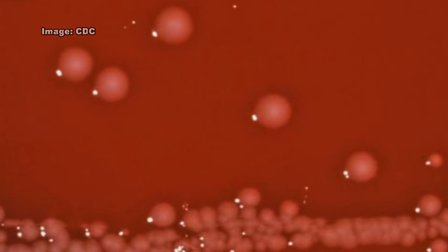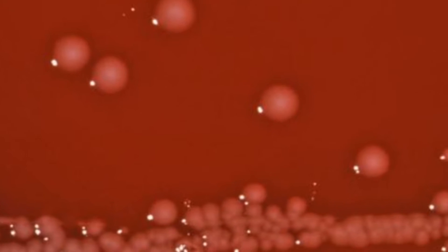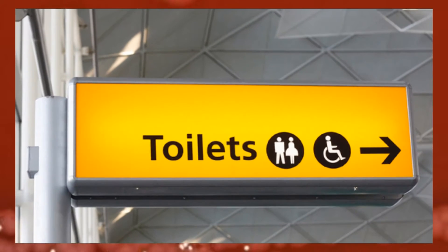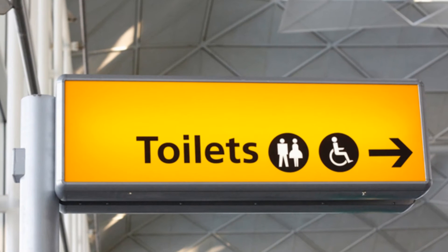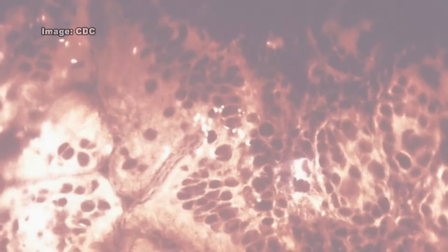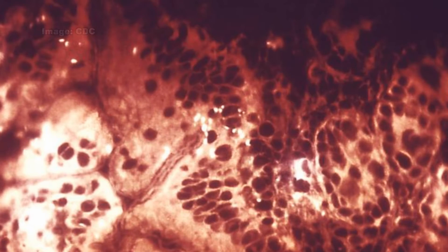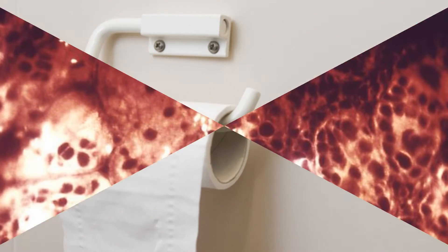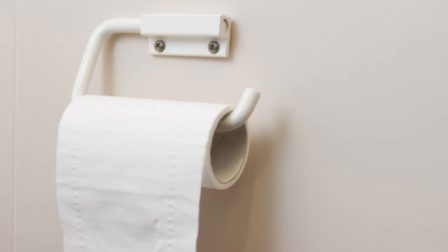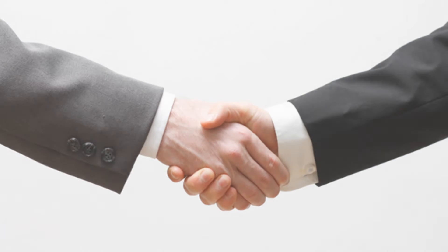Shigella bacteria can pass from one infected person to the next. Shigella are present in the diarrheal stools of infected persons while they are sick and for up to a week or two afterwards. Most Shigella infections are the result of the organism passing from the stools or soiled fingers of one person to the mouth of another person.